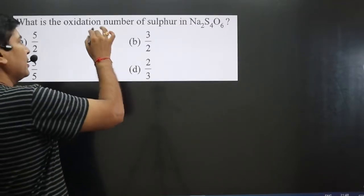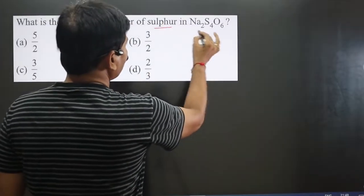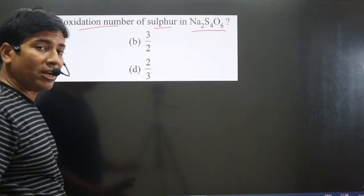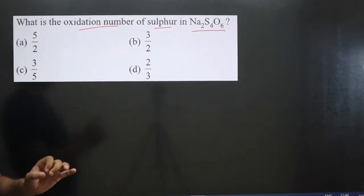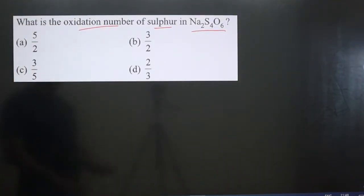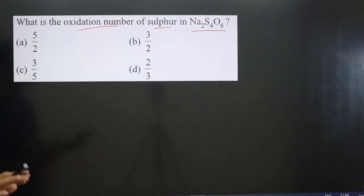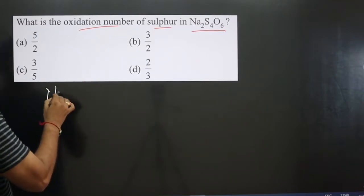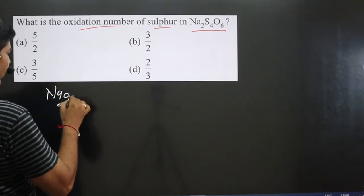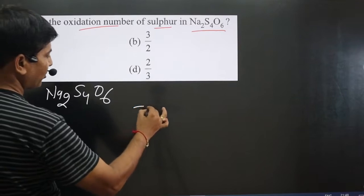The question asks: what is the oxidation number of sulfur in the given compound? It is a neutral compound — Na₂S₄O₆ — and we have to calculate the oxidation number of sulfur. We can follow the oxidation number rules for this very interesting compound.